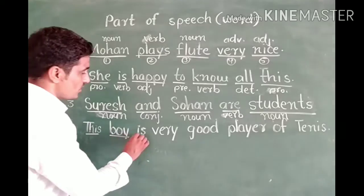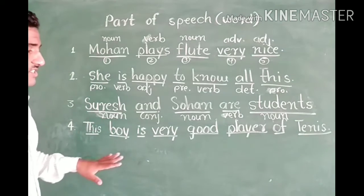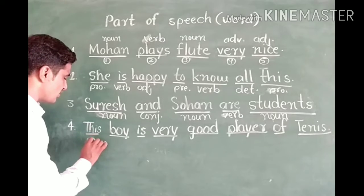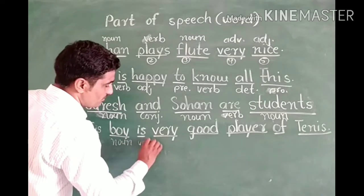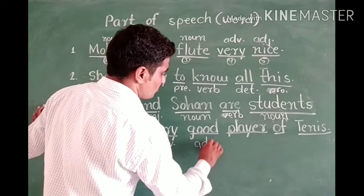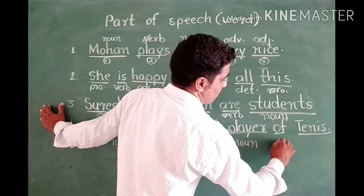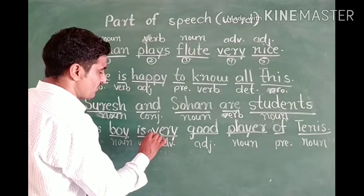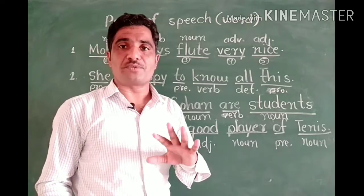Next: 'This boy is very good player of age.' In this speech there are different types of words. This is an adjective. Boy is a noun. Is is a verb. Very is the adverb. Good is the adjective. Player is the noun. Of is a preposition. And A is also a determiner. So every part of speech has a different role.